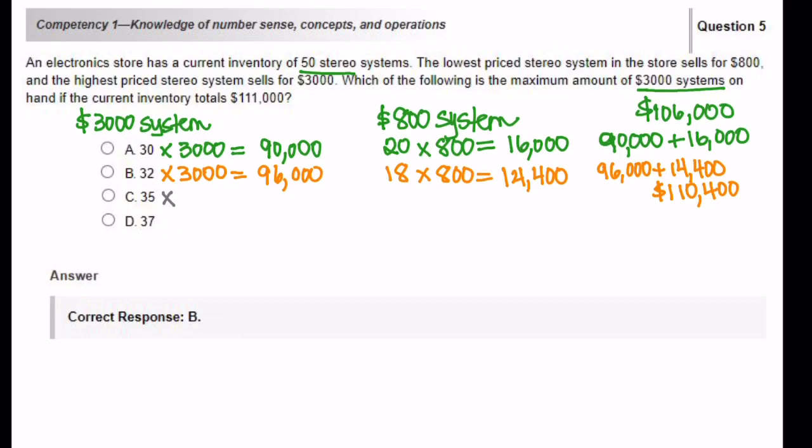Let's look at answer choice C. 35 times $3,000 is going to get us $105,000. So we have 15 of the $800 system. So we're going to multiply that by $800 to get $12,000. When we put the two systems together, we get $117,000.